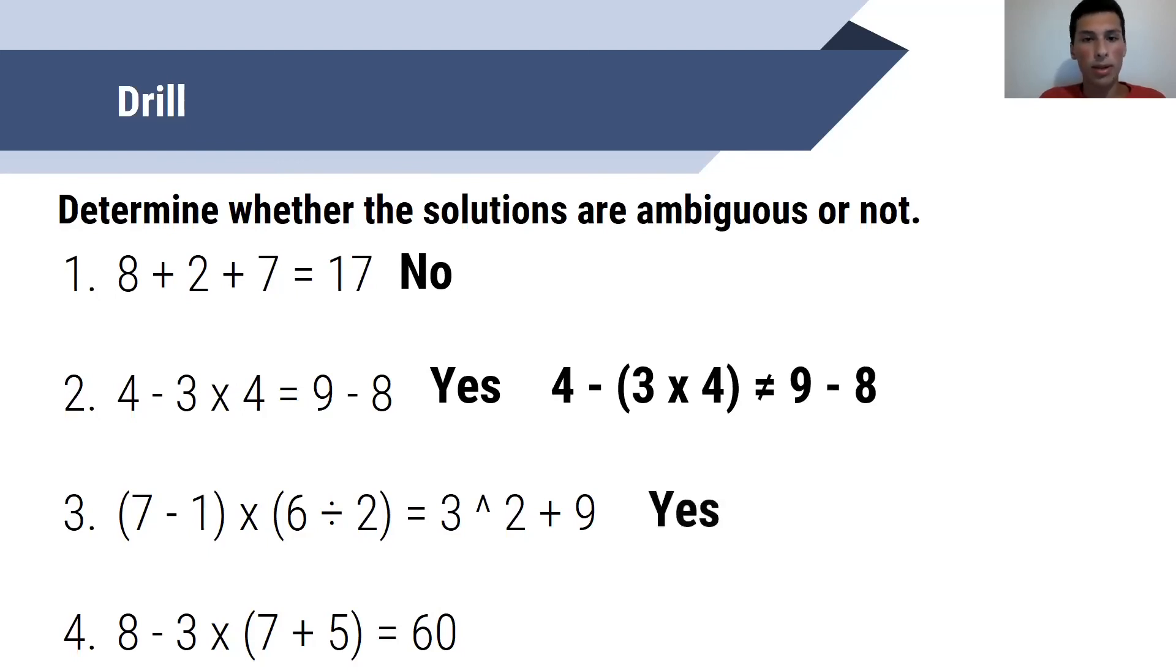This one is also ambiguous. I could interpret this one as in parentheses 7 minus 1 times in parentheses 6 divided by 2. Although the solution side remained the same, I interpreted the goal side as 3 to the power of in parentheses 2 plus 9, which makes it 3 to the power of 11, and that is a very large number that is definitely not equal to the solution side.